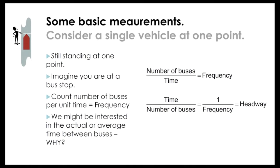Flow doesn't have to be cars — it can be calculated for any moving object: pedestrians, ants, birds, or buses. In the context of public transport, flow is usually called frequency because it's the same thing: the number of buses passing a certain point over a specific time period.